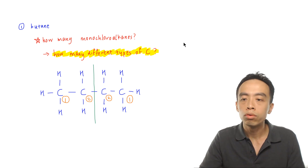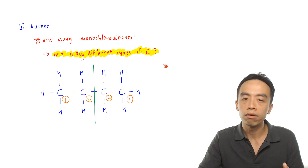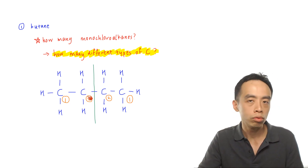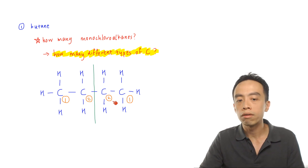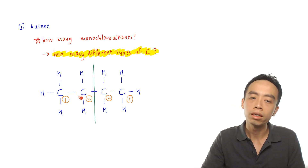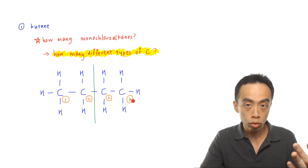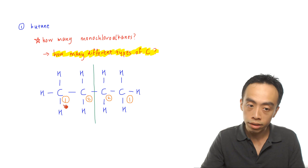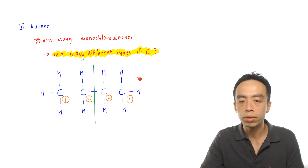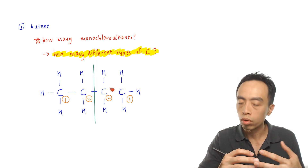We notice that we have two different types of carbon, or two different carbons in two different chemical environments. If substitution occurs at carbon position 1, we get one product, and if substitution occurs at carbon position 2, we get a second product. Since the two type-2 carbons are identical, substitution at either of those positions gives the same product. Similarly, substitution at either type-1 carbon gives the same product.